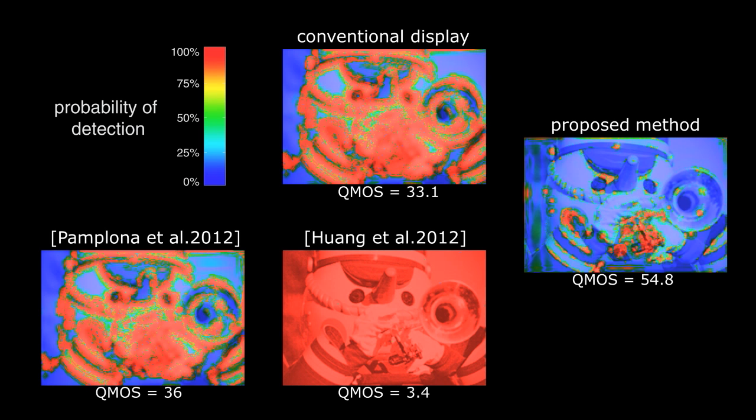To evaluate the combined effect, we use a perceptual metric HDR VDP2 which provides a difference detection map and a quality score. Here our result has the highest score.